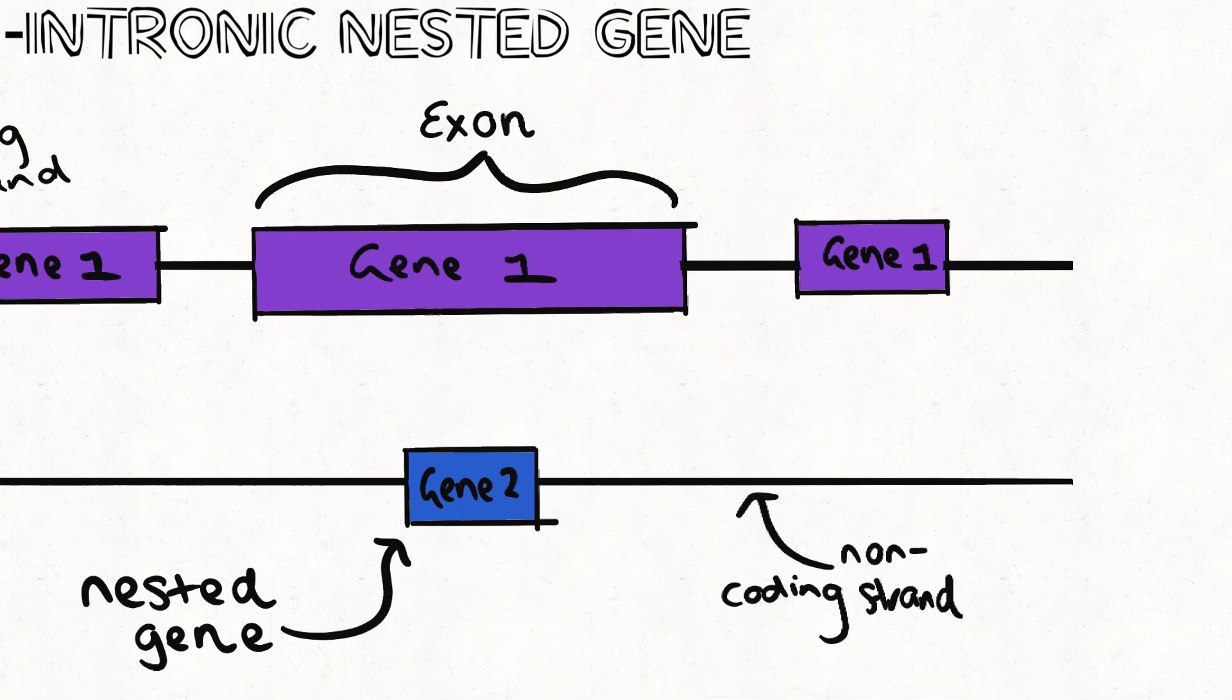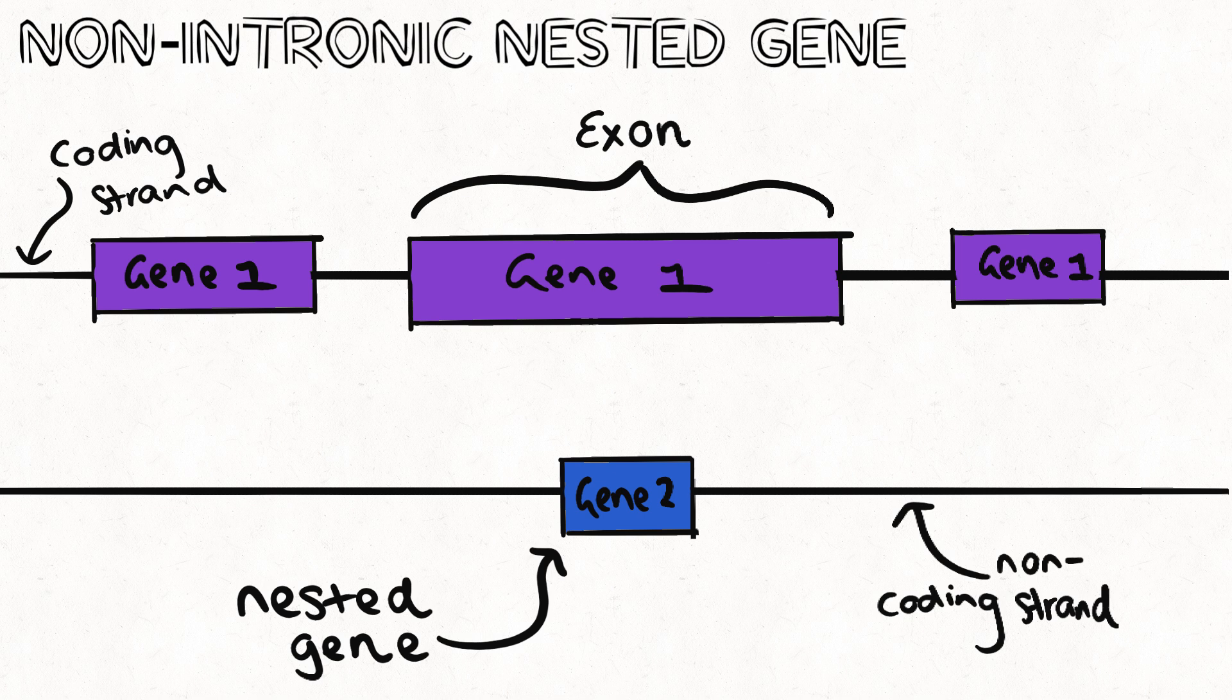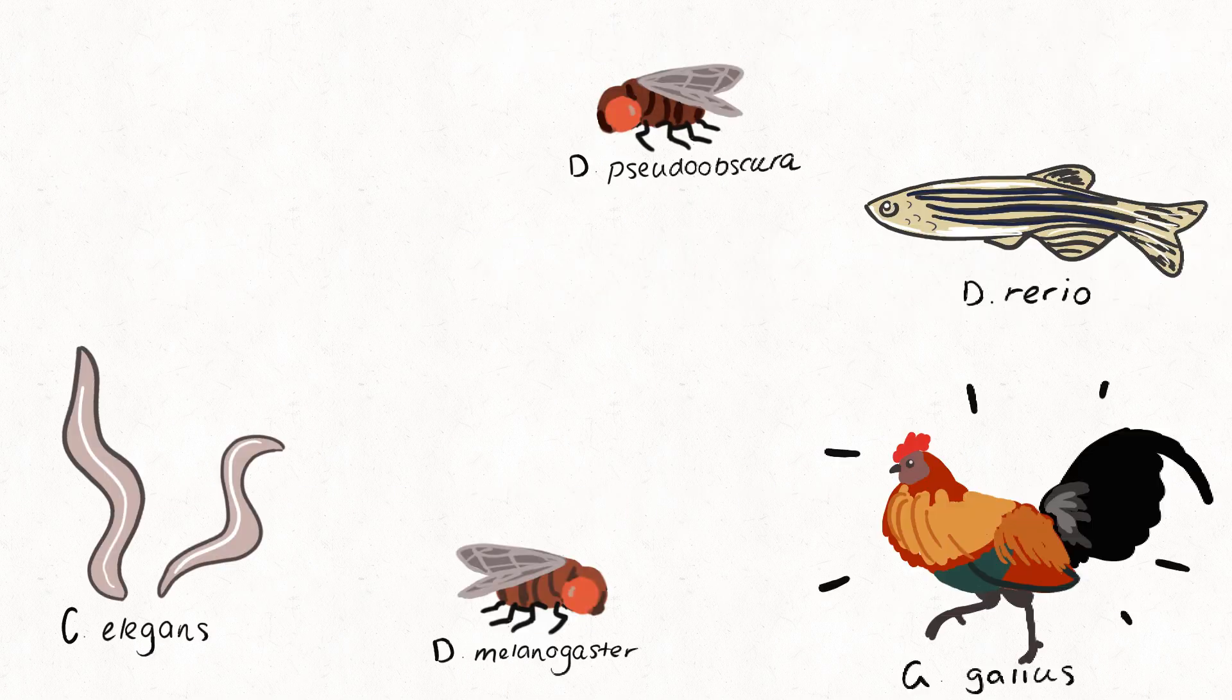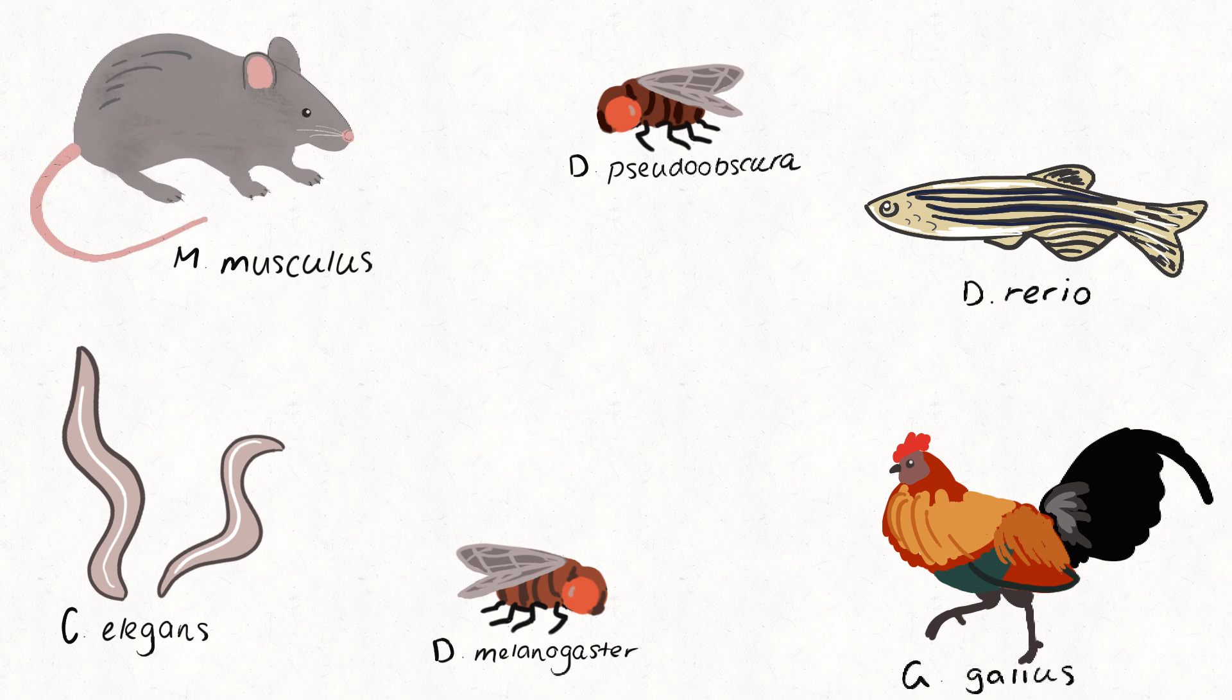And the mystery just keeps on building, as it has been found that nested genes can even exist inside other coding regions. We now know that arrangements like the GART locus are common across the eukaryotic domain. There's even over 150 of them in you.